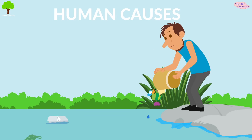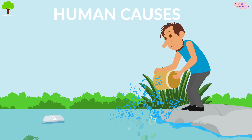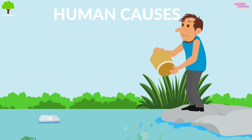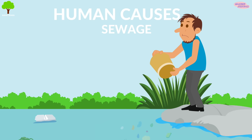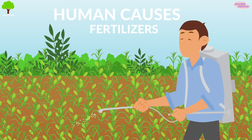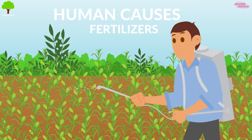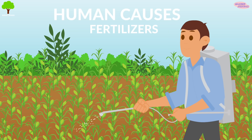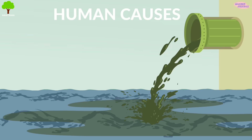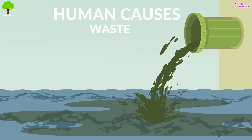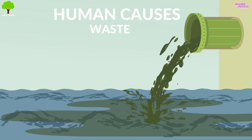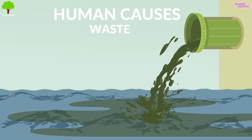Human causes. Some human causes for water pollution are sewage, fertilizers and pesticides from farms, and waste from factories and construction sites.